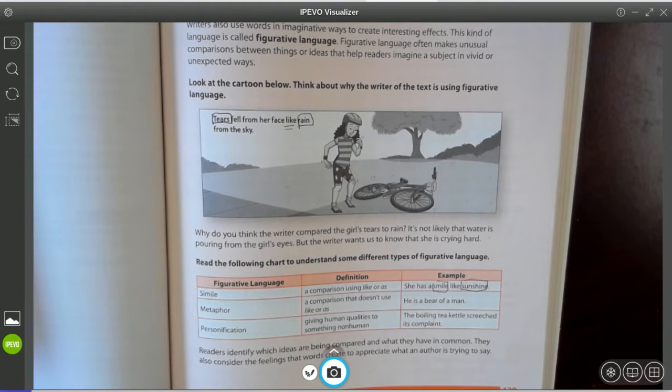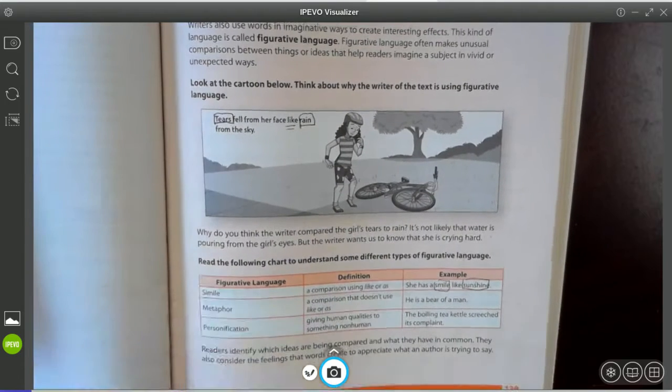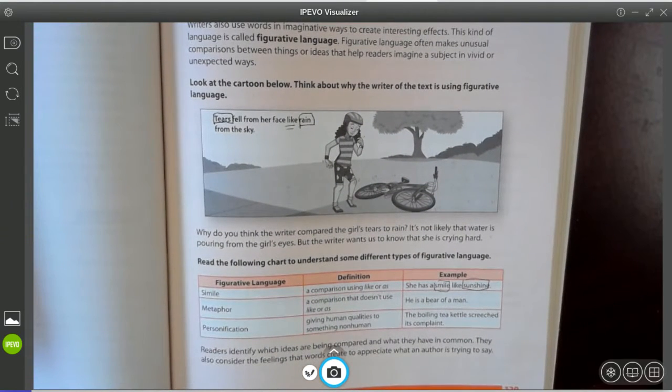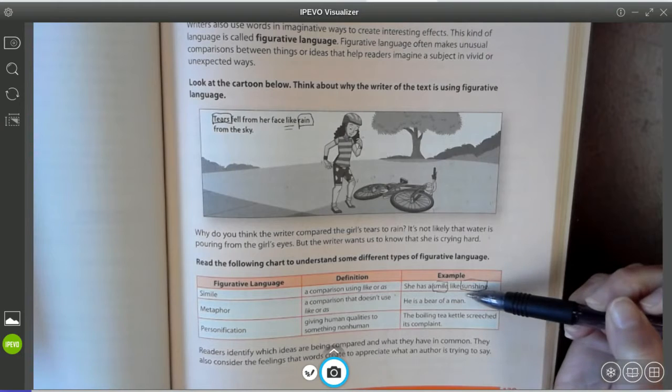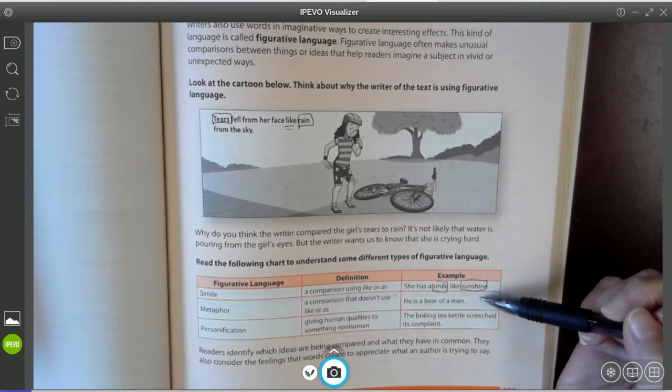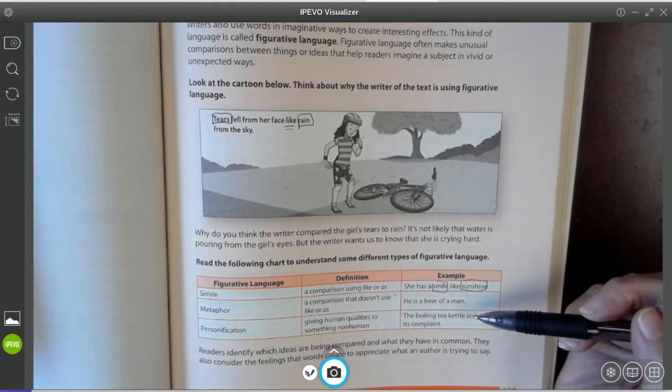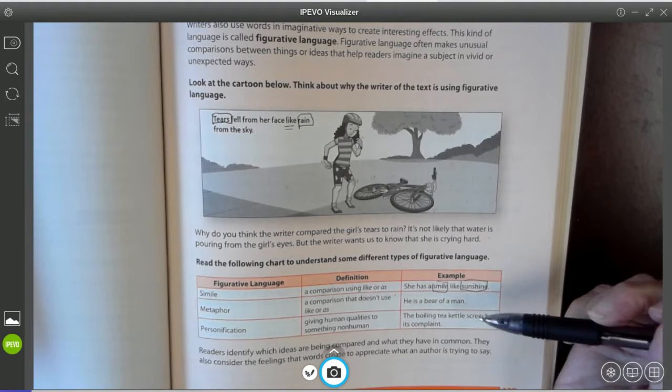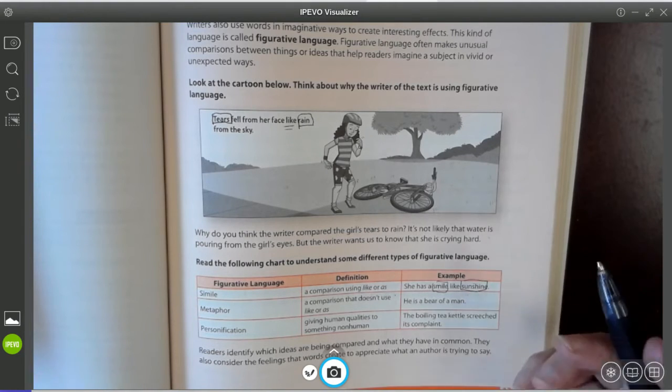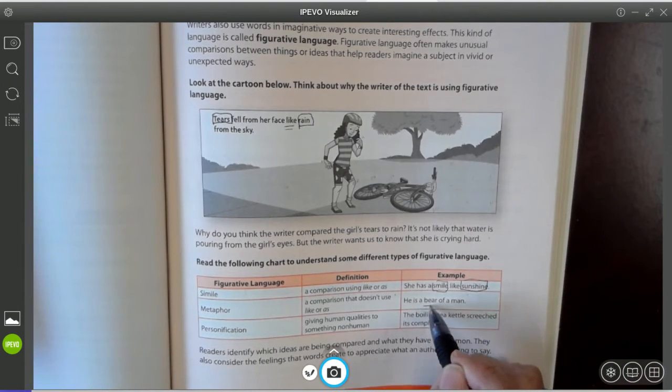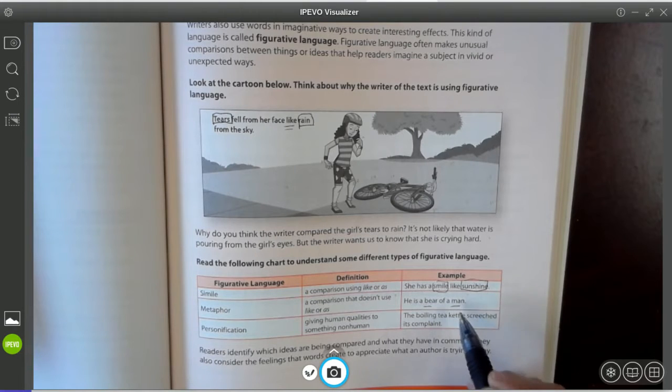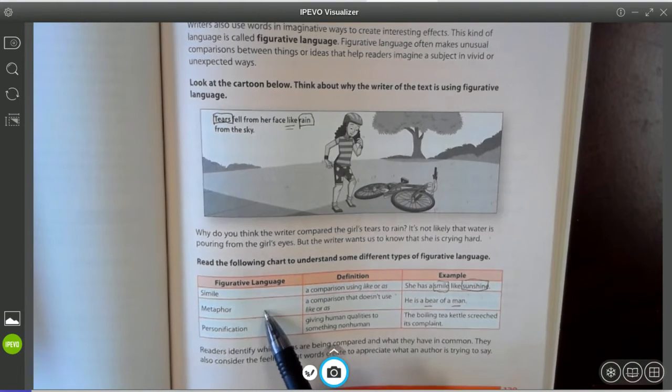A metaphor is a comparison that doesn't use like or as. But still comparing two things. He is a bear of a man. So this is telling me what I know about a bear is a bear is large. I mean, he's big and broad. Could be tall. So this man is probably a large man who's tall and broad. But notice it's comparing these two things, but there's no like or as. So that makes it a metaphor.